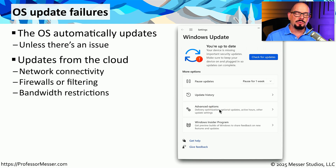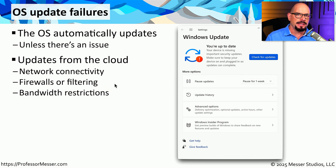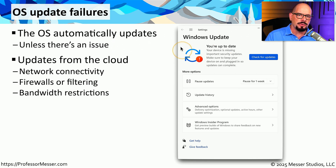Do we have a good connection to the internet, and are we able to download files from other third-party websites? We might also want to look at any firewalls or filtering that might be in place, just in case someone has added a new rule to the firewall that is preventing access to Windows Update.